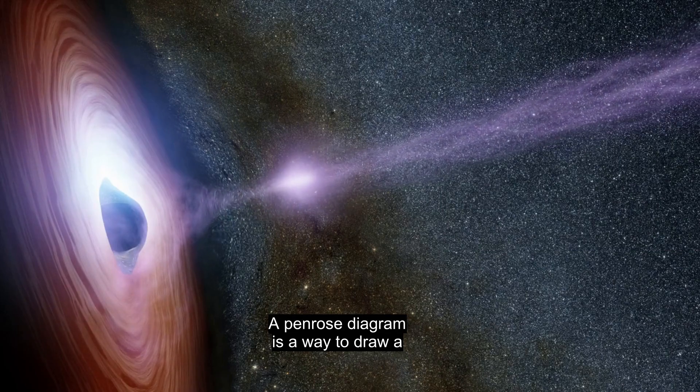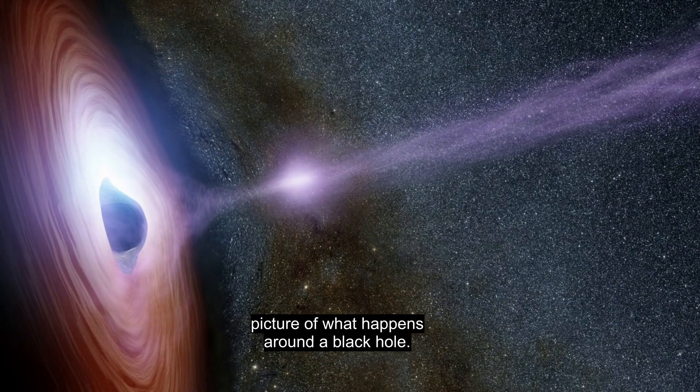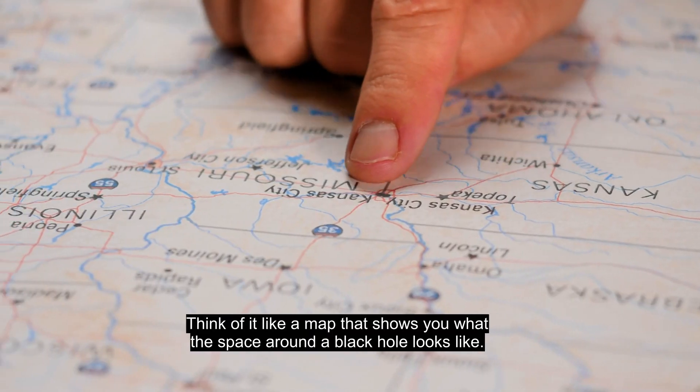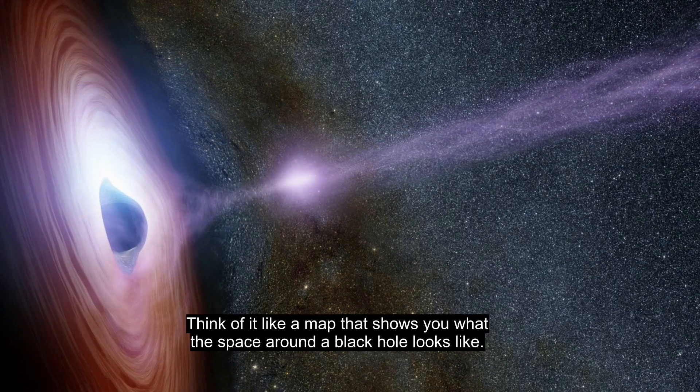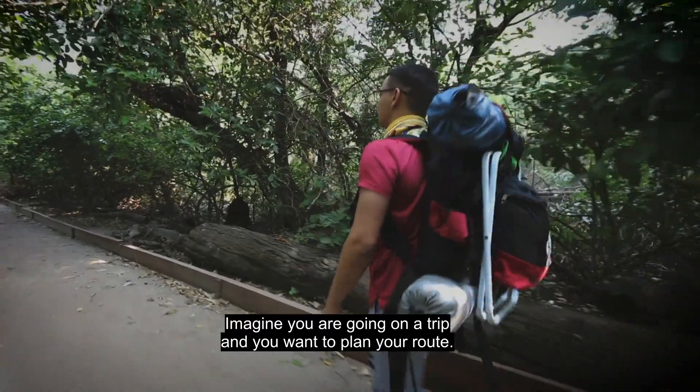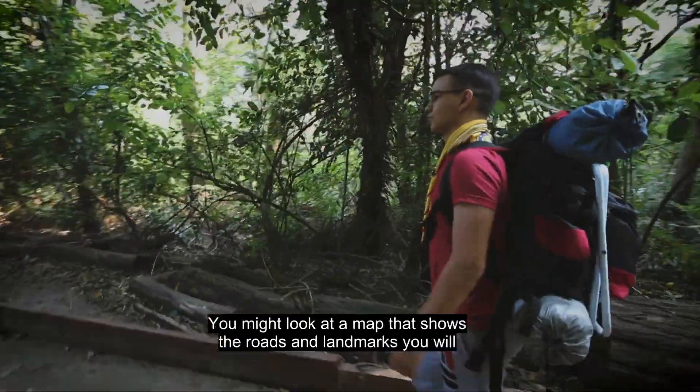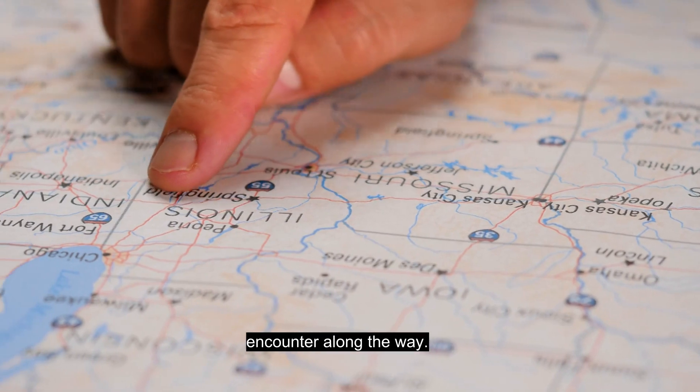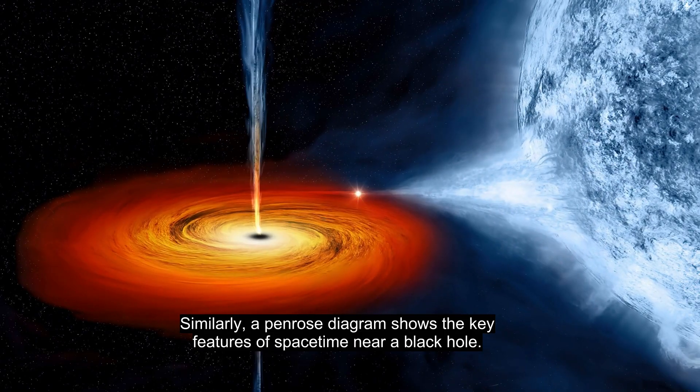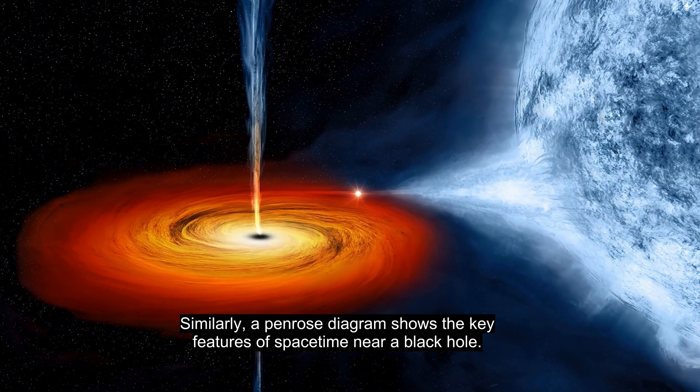A Penrose Diagram is a way to draw a picture of what happens around a black hole. Think of it like a map that shows you what the space around a black hole looks like. Imagine you are going on a trip and you want to plan your route. You might look at a map that shows the roads and landmarks you will encounter along the way. Similarly, a Penrose Diagram shows the key features of spacetime near a black hole.